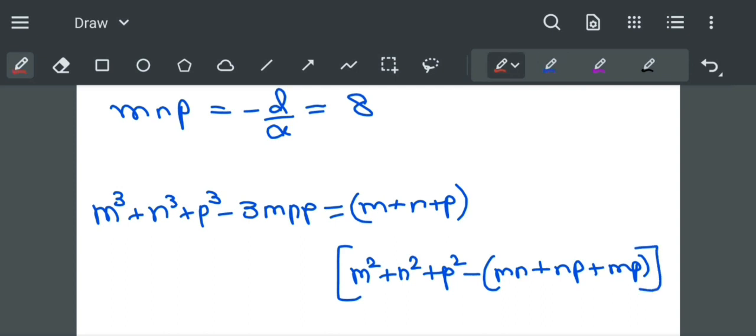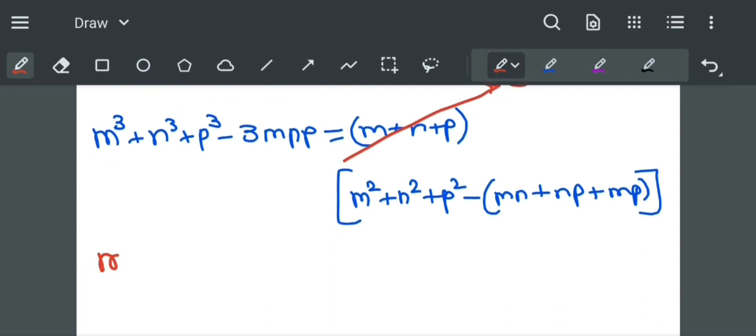We can see that this term is 0, so m cube plus n cube plus p cube is equal to 3mnp.